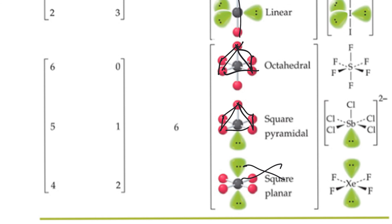These shapes are actually easy to predict once you know the five basic geometries: linear, trigonal planar, tetrahedral, trigonal bipyramidal, and octahedral. From there, mentally replace one atom at a time with a non-bonding pair, and you end up with all the various molecular shapes.